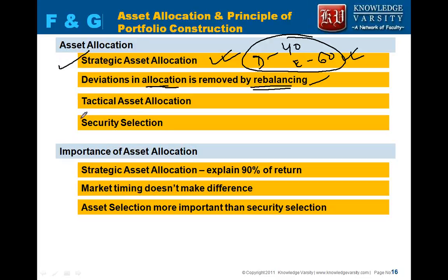There are two things in asset allocation: strategic asset allocation and tactical asset allocation. Strategic asset allocation takes a longer-term view into consideration — including the investor's long-term liquidity needs — to create the allocation. You also specify in the IPS that, in certain situations depending on market expectations, the fund manager can change the allocation in the portfolio. That is called tactical asset allocation.